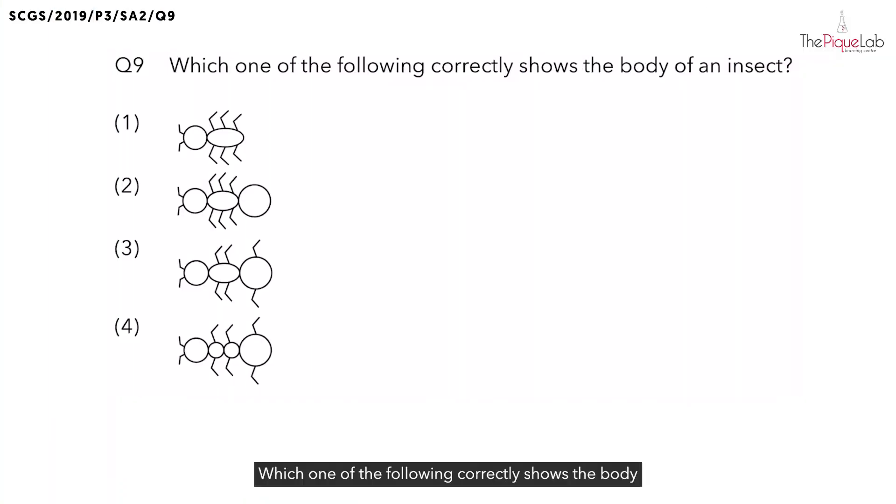Question 9: Which one of the following correctly shows the body of an insect? Now let's recall what are the unique characteristics of an insect. We know that insects have six legs and they also have three body parts.